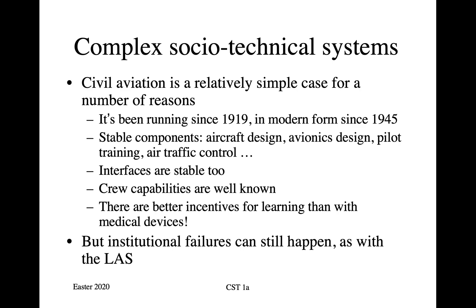Let's look at the system of civil aviation, which is a relatively simple one for a number of reasons. The first is that it's been running since just after the end of World War I, and in its modern form since the end of World War II. As a result, it's got stable components. Aircraft design hasn't changed all that much since the late 1940s, neither has the design of avionics. We use basically the same kit, although it's modern and digital rather than old-fashioned and electromechanical. Pilot training is much the same as it was in the 1940s or 1950s; flying on instruments is still the same skill, and air traffic control works in the same way.